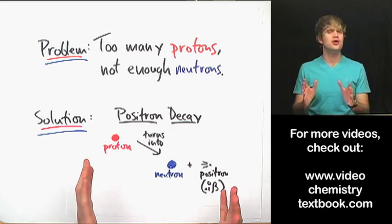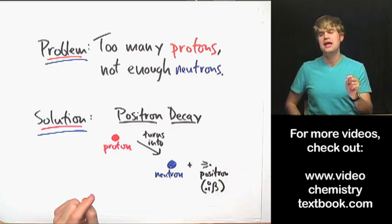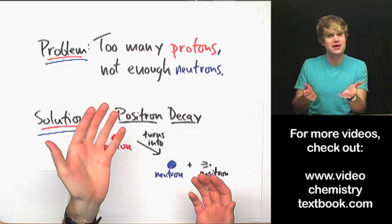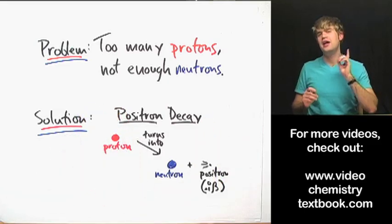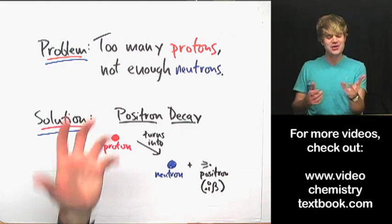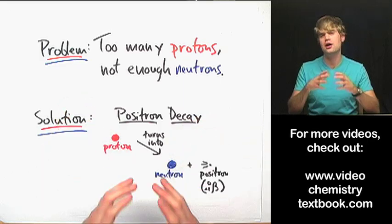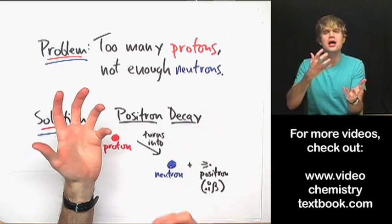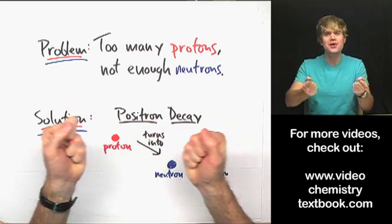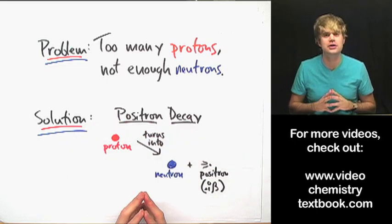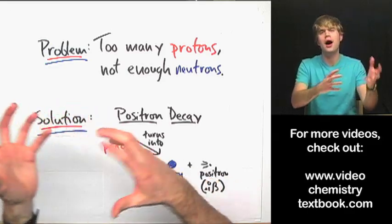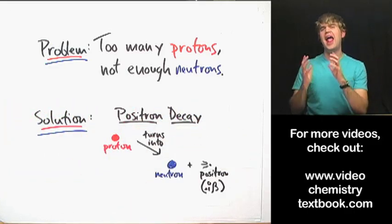We haven't talked about positrons yet and they're pretty interesting. A positron is like the opposite of an electron. It weighs as much as an electron — it is identical to an electron in every way except it's positively charged. So electrons and positrons are kind of like, from comic books, superheroes and villains. They're sort of enemies and their job is to cancel each other out, to annihilate each other. An electron is an example of matter, and a positron is an example of what we call antimatter.